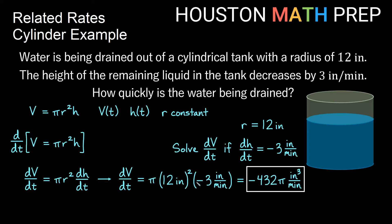Obviously we're going to get negative because we have a negative three here. So how quickly is the water being drained out of the tank? It's being drained out of the tank at a rate of 432 pi cubic inches per minute.